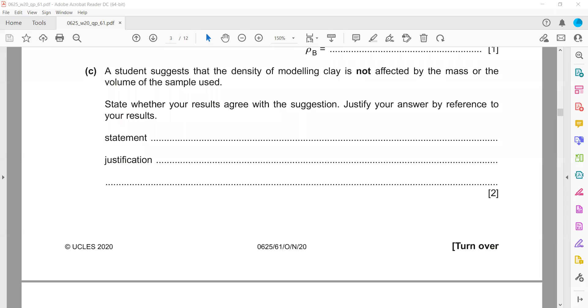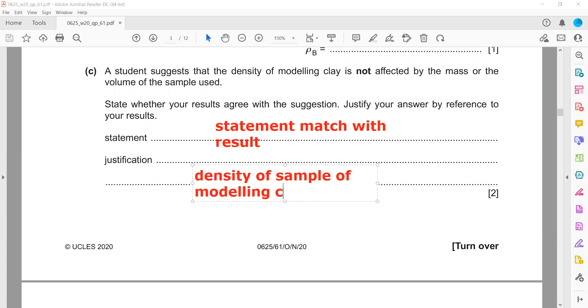Justification: the density of sample A of modeling clay was 1.89 g/cm³, and the density of sample B of that modeling clay is 1.88 g/cm³. We changed the sample, but we are getting approximately the same density.